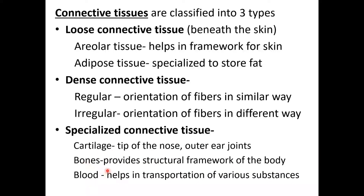Specialized connective tissue provides a structural framework of the body. Cartilage is found at the nose tip, outer ear, and joints. Tendons connect bone to muscle, and ligaments connect bone to bone.